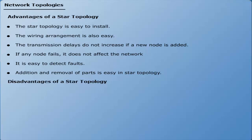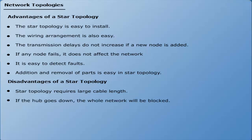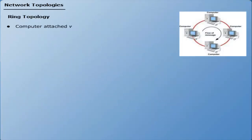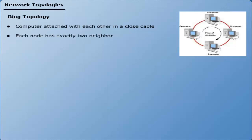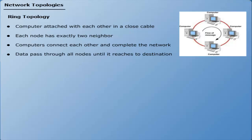Disadvantages of star topology: it requires large cable length, and if the hub goes down the whole network will be blocked. Ring topology: computers are attached to each other in a closed cable loop. Each node has exactly two neighbors. Data passes through all nodes until it reaches its final destination. Any break in the connection loop might take down the entire network.